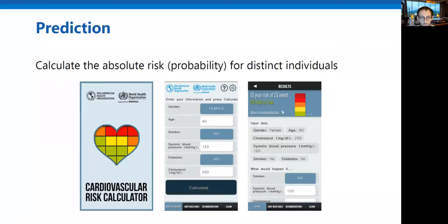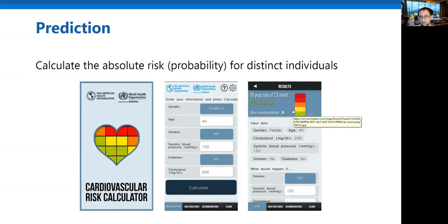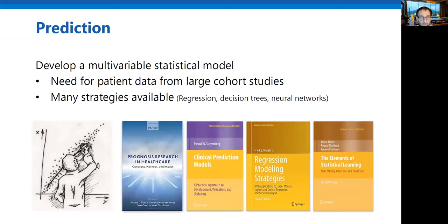Prediction models have been around for a while. One example is a risk calculator implemented in a mobile app that predicts cardiovascular disease, where you input age, gender, smoking status, diabetes, and other variables, and it gives you a risk calculation. For this particular patient — a 40-year-old non-smoking woman — her risk of cardiovascular events within the next 10 years was predicted to be low. The literature is full of such prediction models, with the main recommendation being that you need a representative, large sample, typically from a cohort study. Many prediction models use regression, though machine learning methods are increasingly adopted.